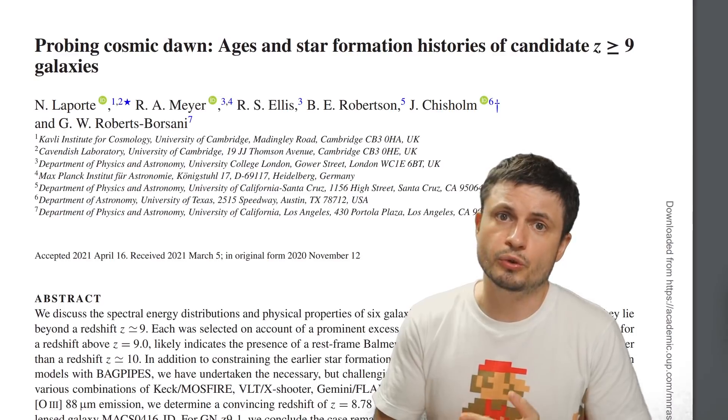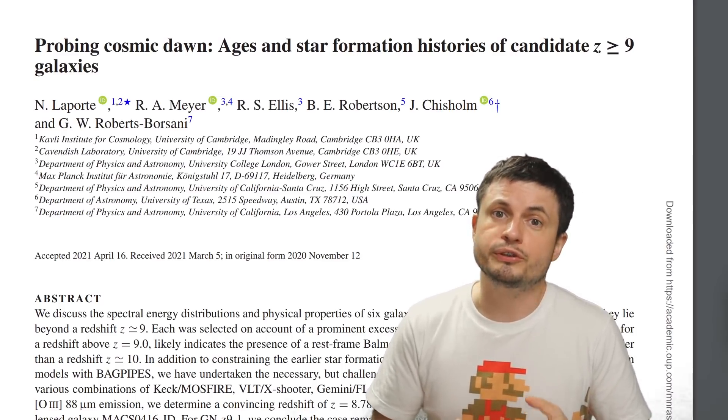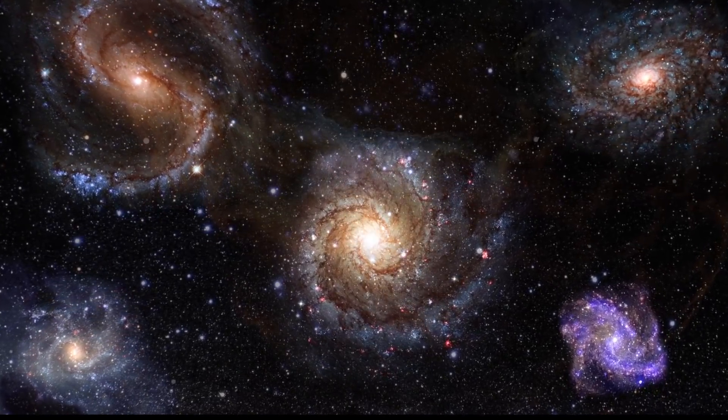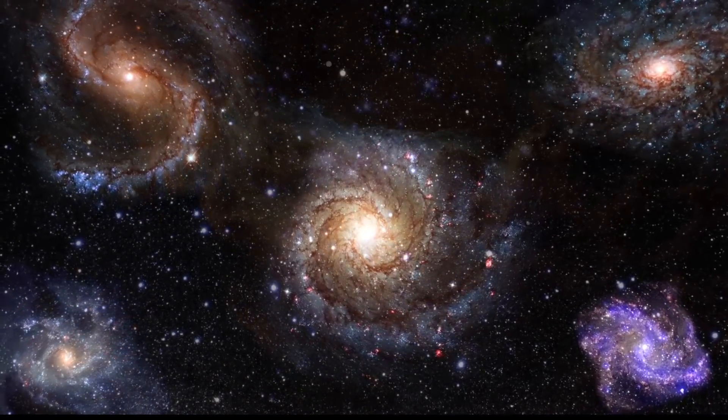They chose six galaxies that were assumed to be some of the most distant ever discovered, and used several very well-known techniques to re-establish their distance and to also then calculate their age, which would then allow them to possibly predict when the first stars appeared in the universe.